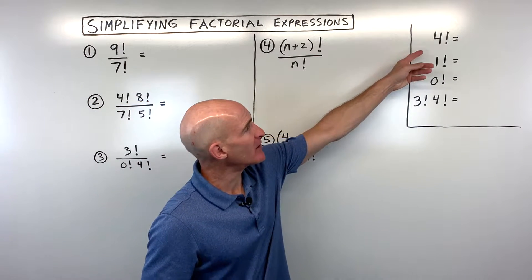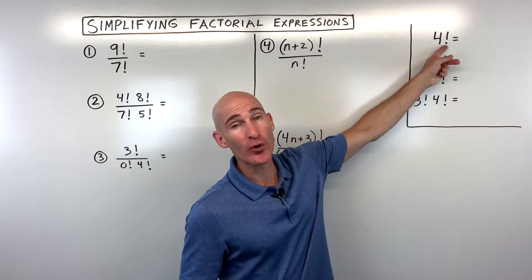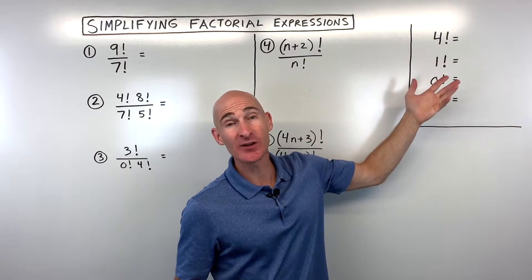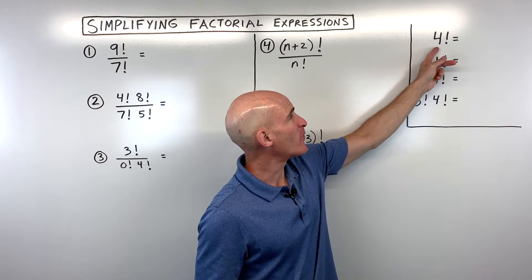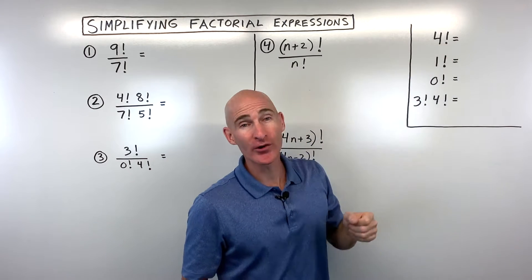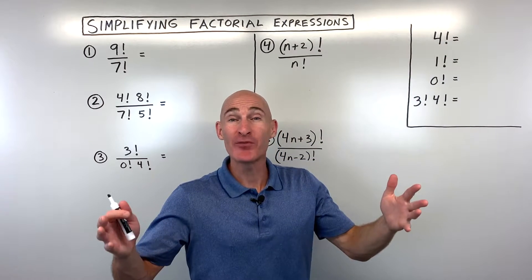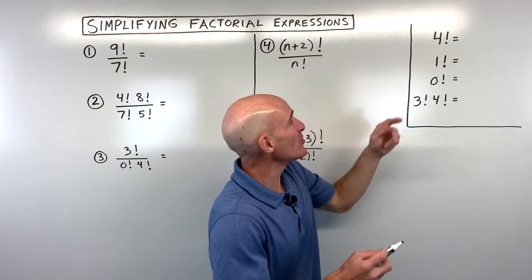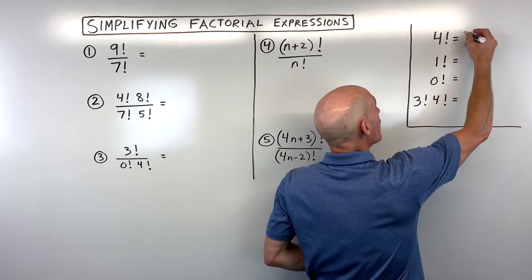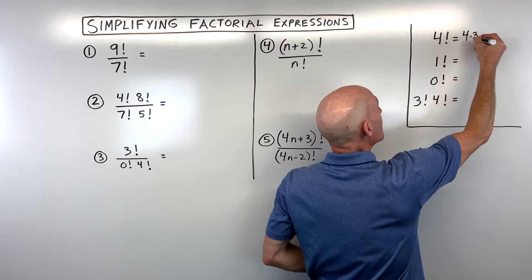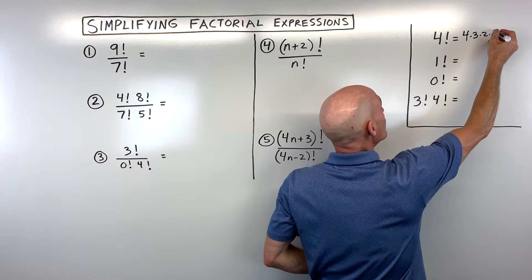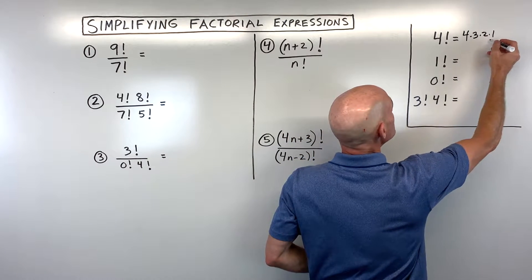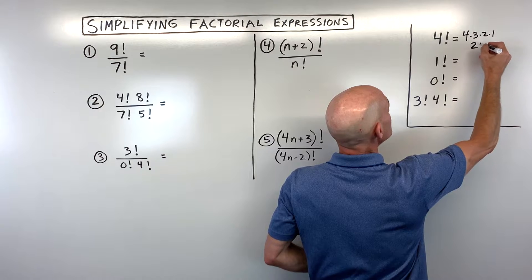The first thing we want to talk about is what exactly is a factorial. It's represented by this exclamation point. If we talk about four factorial, what it means is we're going to start at four and multiply down to one. So it's four times three times two times one, which is equal to 24.